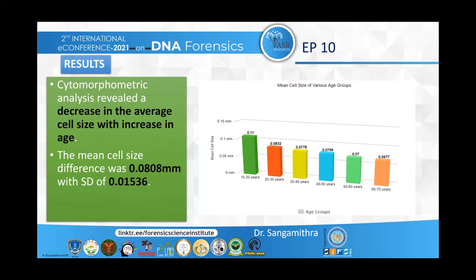After collection, I performed Papanicolaou staining, and then examined the slides under the microscope. I took the average cell size of 10 well-identified cells for each of the slides, after which I calculated the mean and standard deviation across the various age groups.